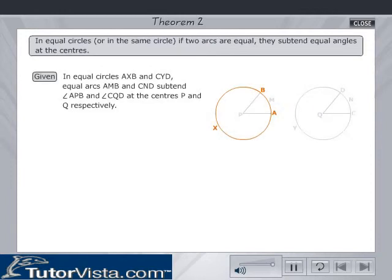Given in equal circles AXB and CYD, equal arcs AMB and CND subtend angle APB and angle CQD at the centers P and Q respectively. To prove that angle APB is equal to angle CQD.